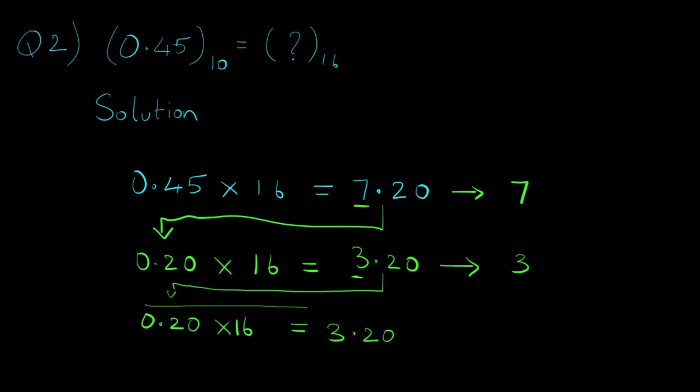So we will stop the process here and we've got our answer, which are these integer parts in ascending order. So 0.45 in decimal is equal to 0.73 in hexadecimal.